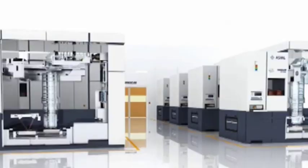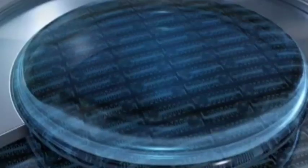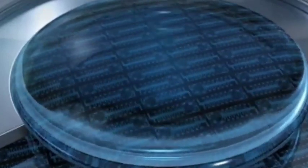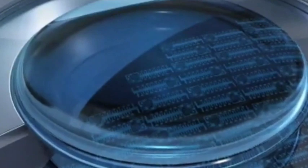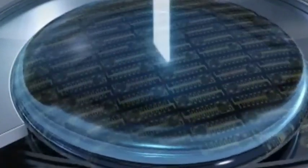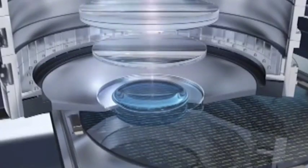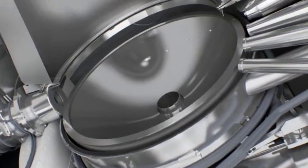The key is that only one company in the Netherlands can produce EUV lithography machines. Not only is it very expensive, with one unit selling for more than $100 million, but the production capacity is also very limited. Major wafer manufacturers, such as TSMC and Samsung, need to schedule their purchases before they can buy them.